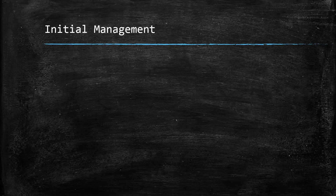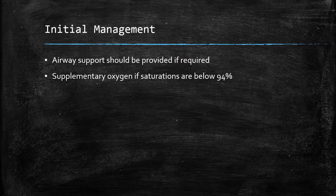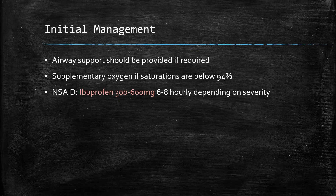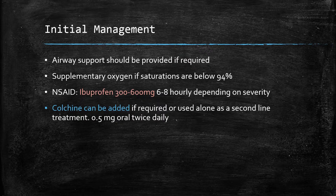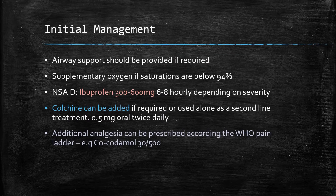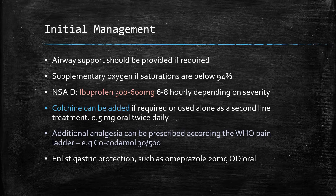How do we manage acute pericarditis? To begin with, always assess the airway; if oxygen is required, give it. Principally, we give high doses of ibuprofen — 300 mg to 600 mg every 6 to 8 hours — depending on severity of pain. This can be stepped up following the WHO pain ladder, adding co-codamol 30/500 mg for example. Colchicine can also be added if required, or used as a secondary agent at 0.5 mg twice daily. It is also important not to forget gastric protection such as omeprazole.